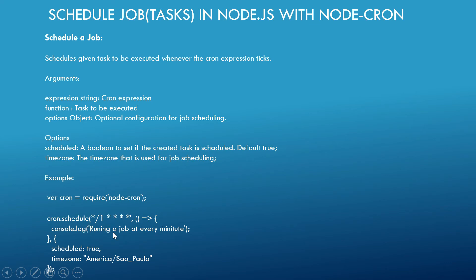If you set 'scheduled' to false, the task must be started explicitly. If you set it to true or leave it blank, the job will automatically start once scheduled. For example: include the module, call cron.schedule with an expression for every minute, define the task logic, and set scheduled to true. You can also replace it with a timezone.